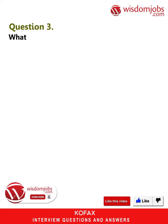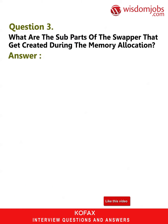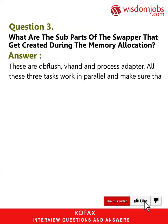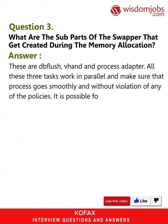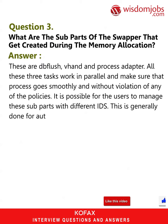Question 3: What are the sub-parts of the swapper that get created during memory allocation? These are Bflush, Bhand, and Process Adapter. All three tasks work in parallel and make sure the process goes smoothly without violating any policies. Users can manage these sub-parts with different IDs, which is generally done for authentication and security purposes.